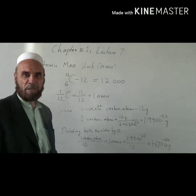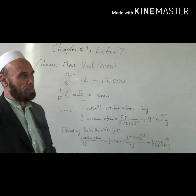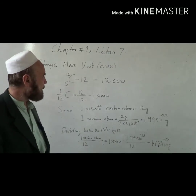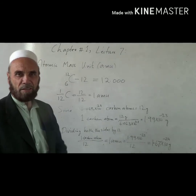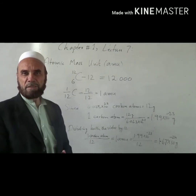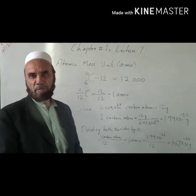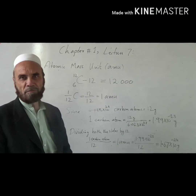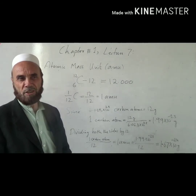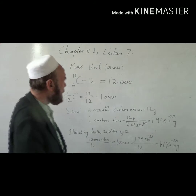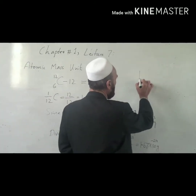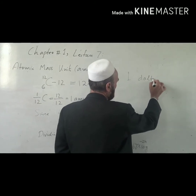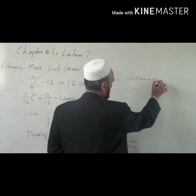Even then, scientists obtained some weights by comparison. For example, in the past during the time of Dalton, the unit for measuring the mass of an atom was called the 'delta' unit, and hydrogen was chosen as the standard. At that time, the weight of hydrogen was taken as one delta unit.